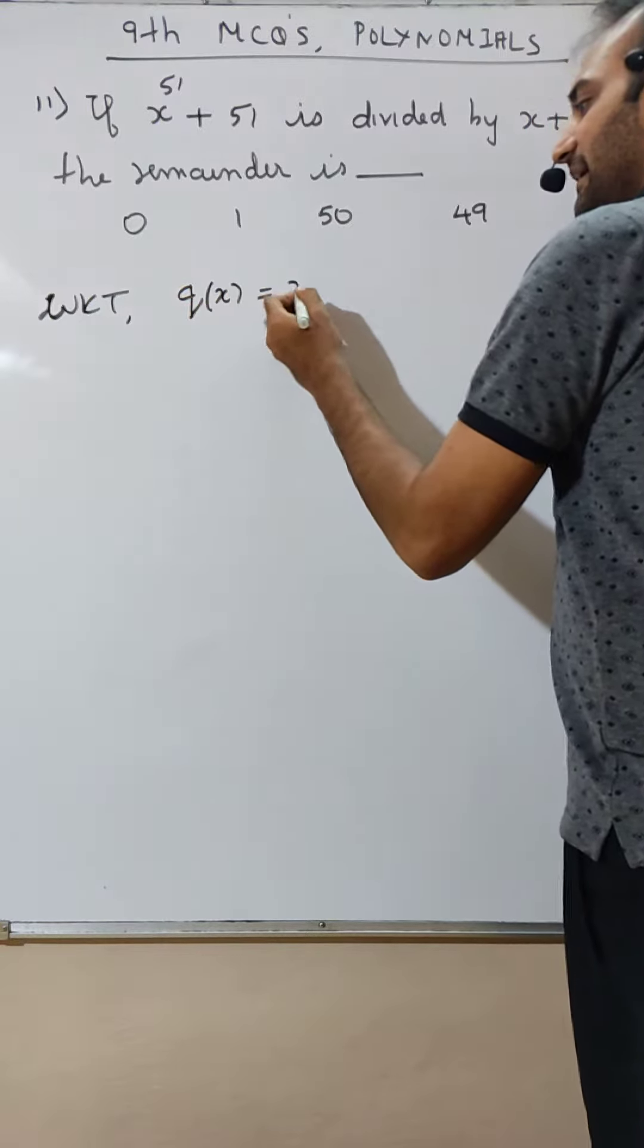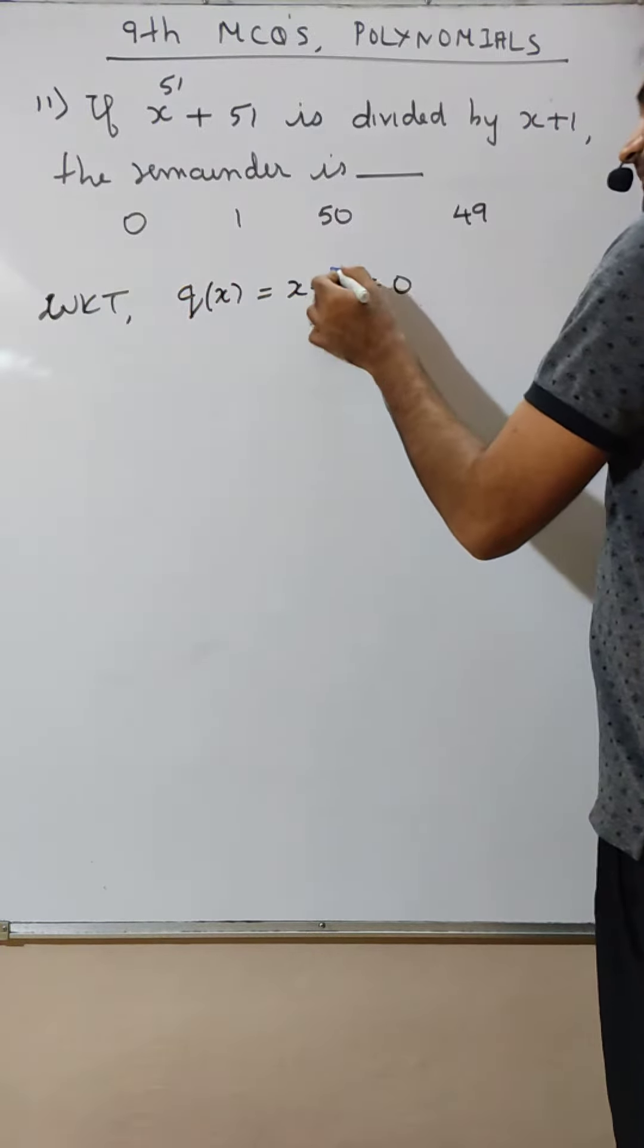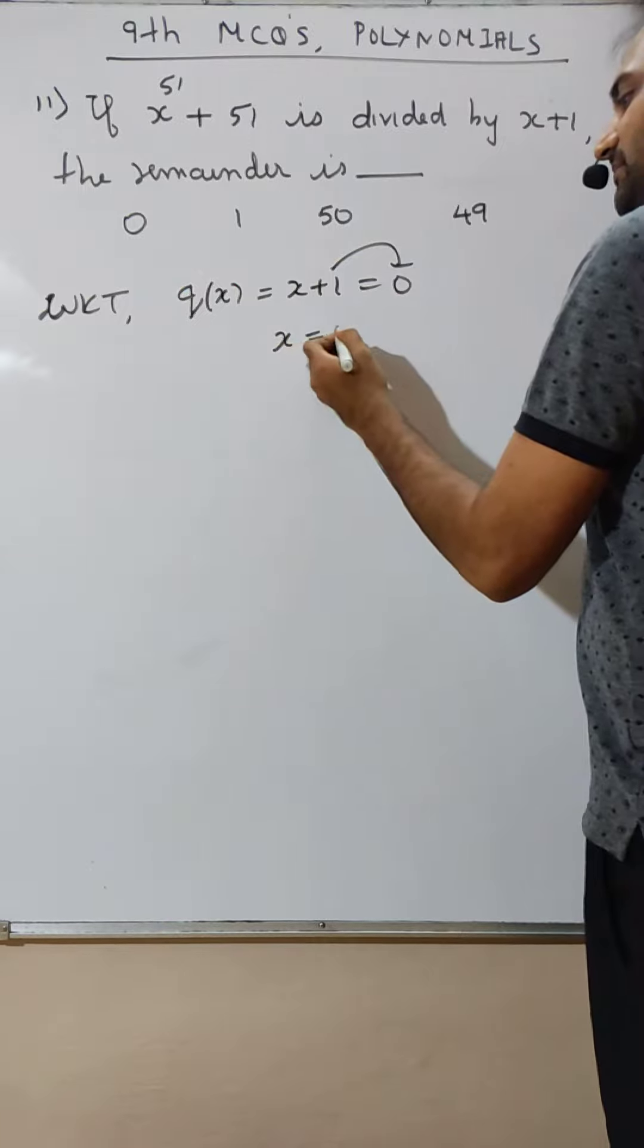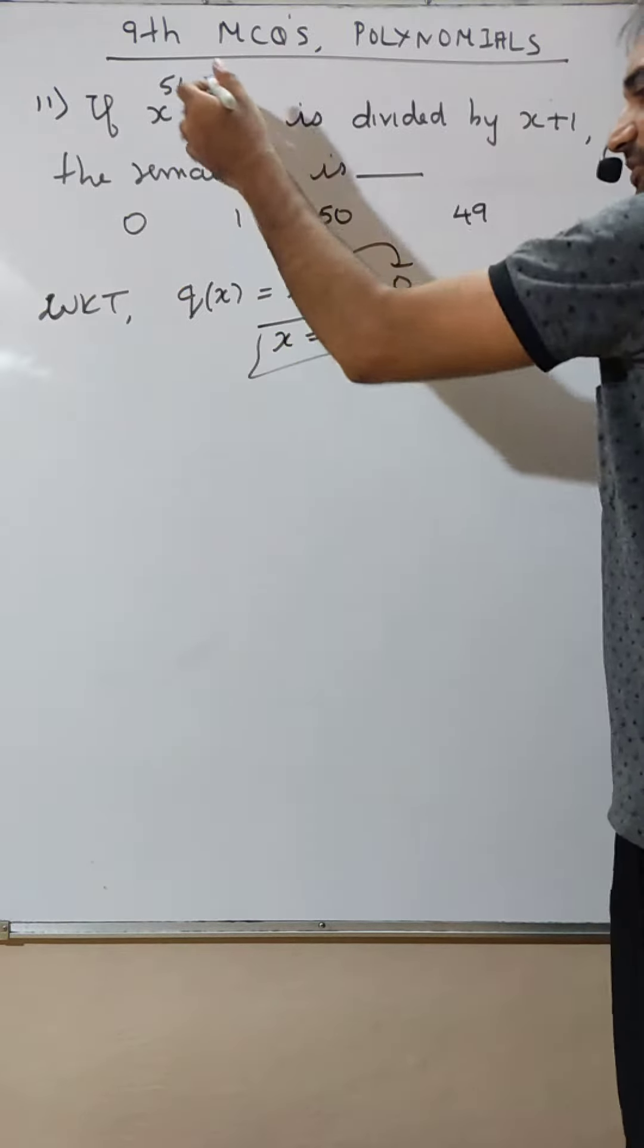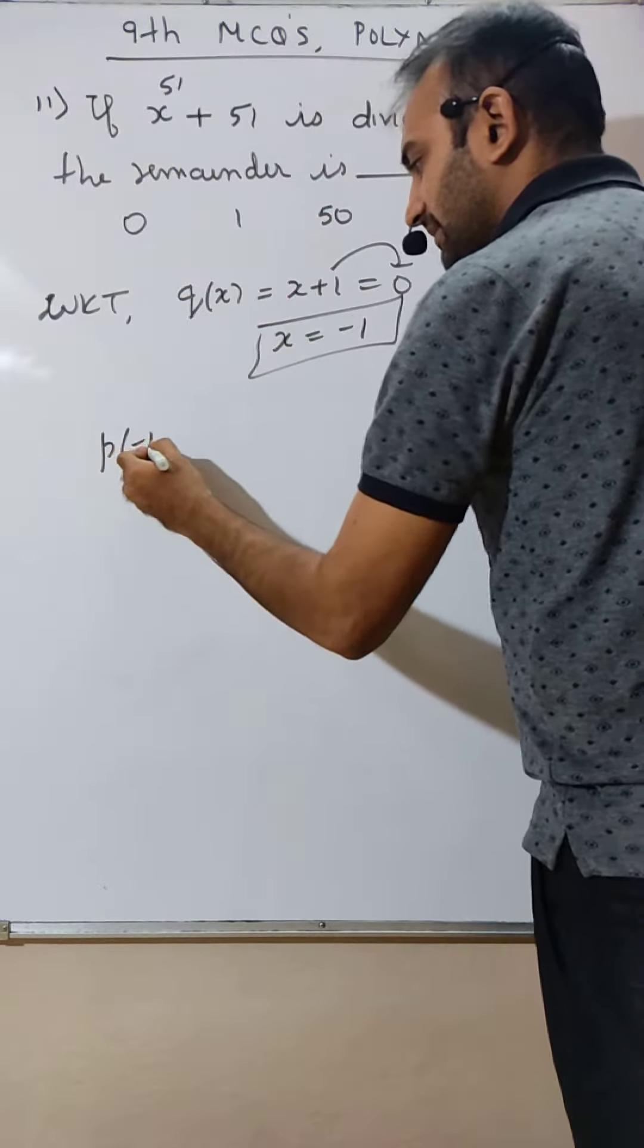q of x. x plus 1 is 0. This goes here. x is minus 1. Put that p of minus 1 here.